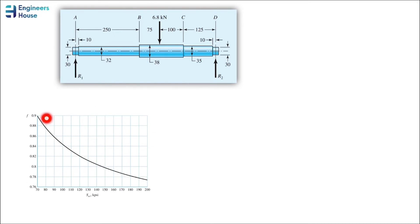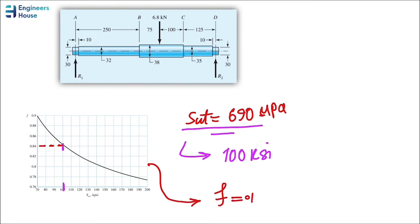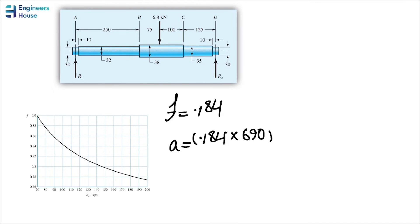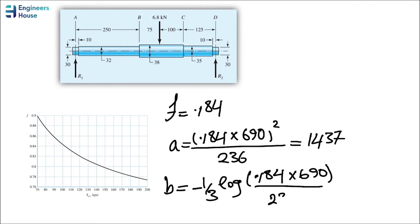This is the diagram we need to use to find out the amount of F. Sut is equal to this value - approximately 100 KSI. On the X axis, we find 100, and continuing this line will give us the value of F. Having the value of F, now obtaining A and B is easy. Now that we have A and B, we can find the value of N.